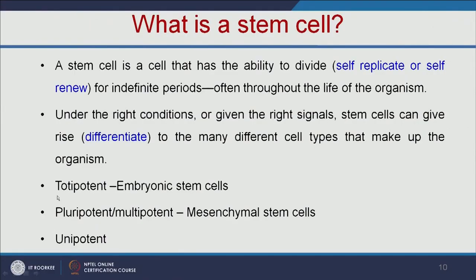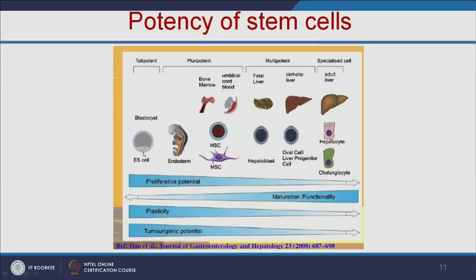Stem cells are divided into three types: totipotent, pluripotent, and unipotent. Totipotent are embryonic stem cells — from them we can get any kind of cells. Multipotent cells, for example mesenchymal stem cells, can give multiple types of cells. Unipotent cells can give only a single type of cell, such as liver stem cells giving hepatocyte cells. Depending on the growth factors or hormones added, stem cells will differentiate into liver cells, kidney cells, or other cell types.